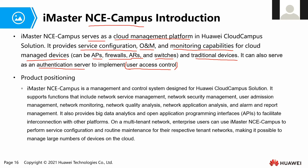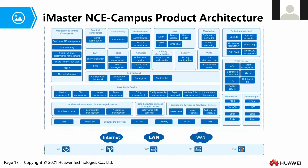In short, NCE Campus can provide monitoring and management. This is the NCE Campus product architecture. Inside our NCE Campus we have different functions such as management, control, convergence, terminal identification, free mobility, authentication, operating and maintenance monitoring, security overlay, underlay orchestration, admission fabric, LAN, and basic network. We have a lot of services and functions here.